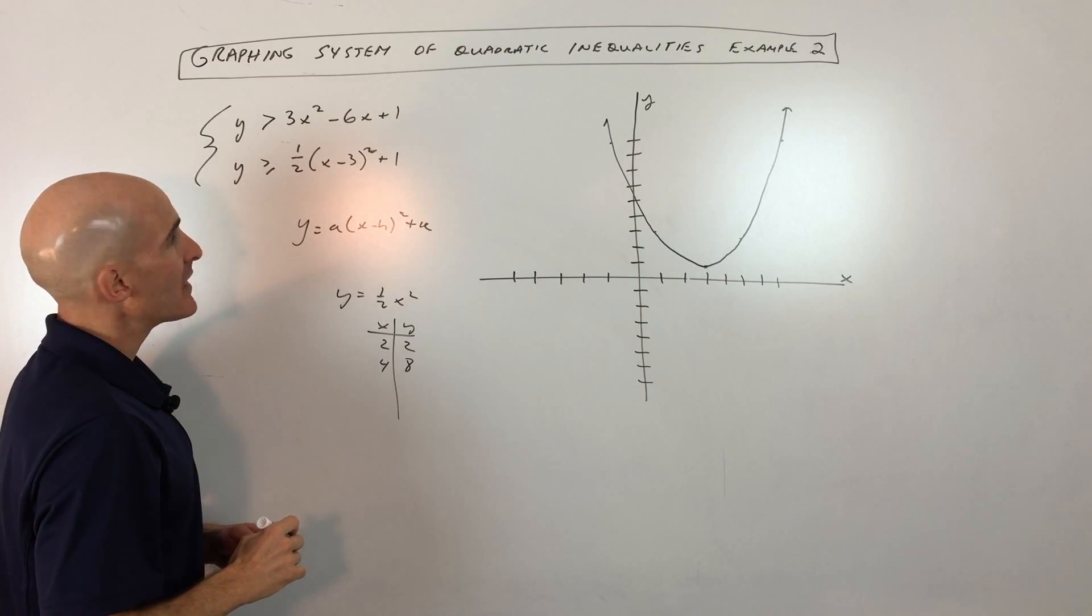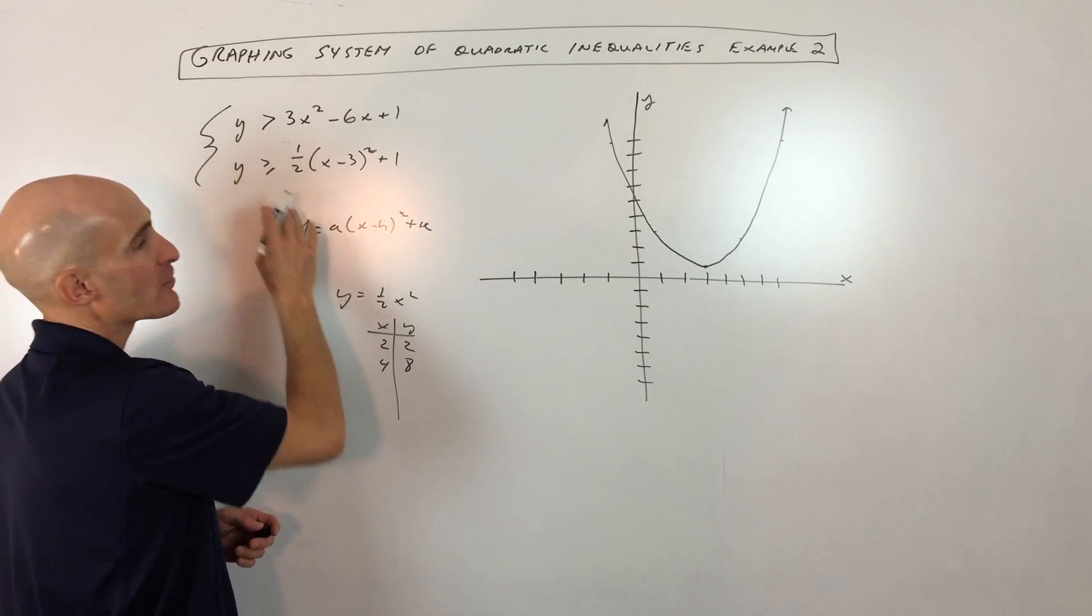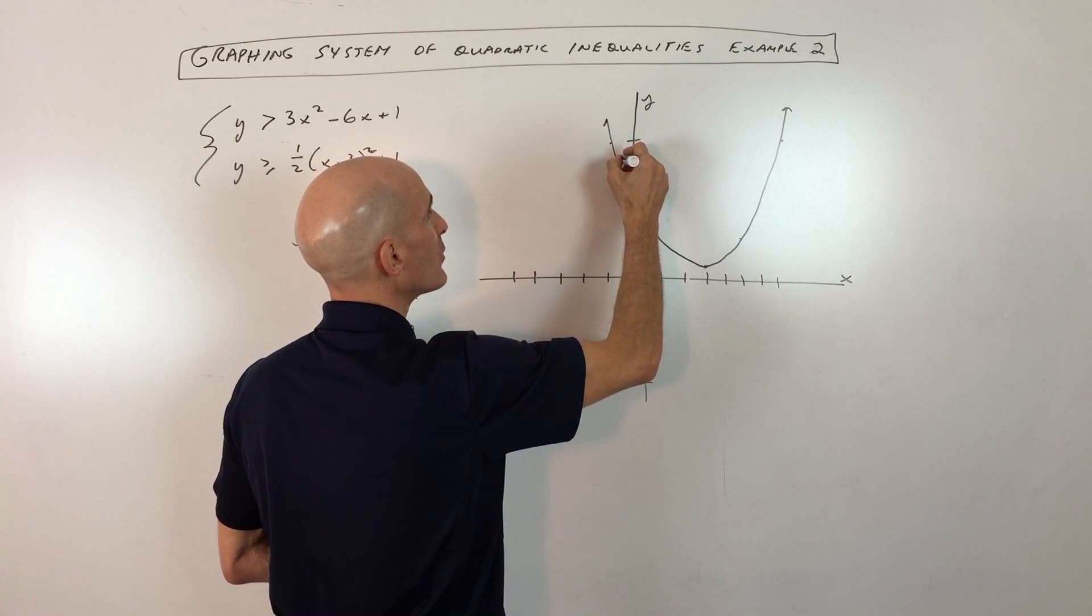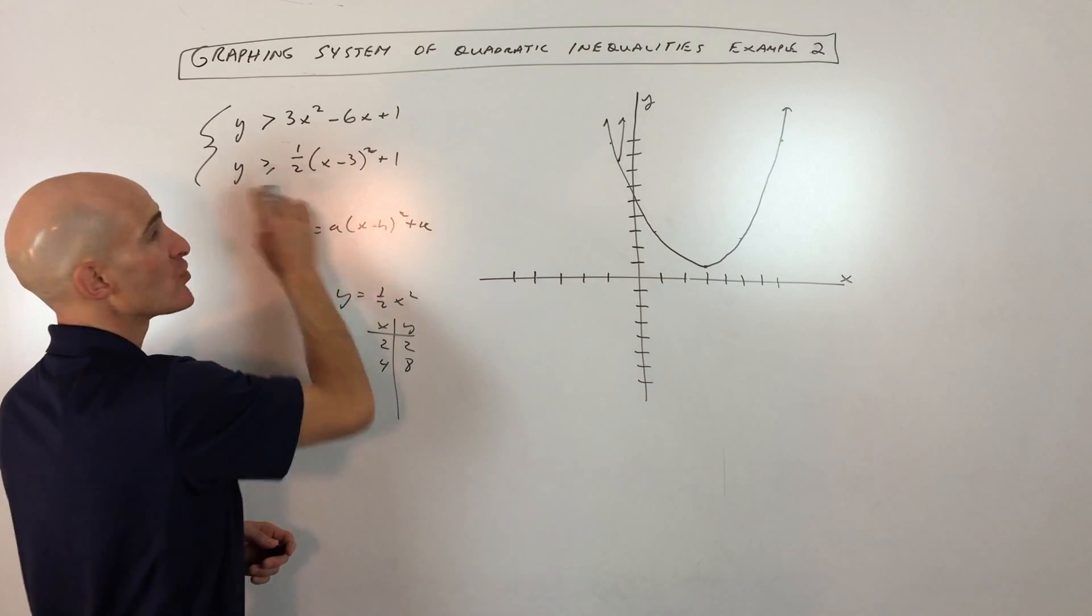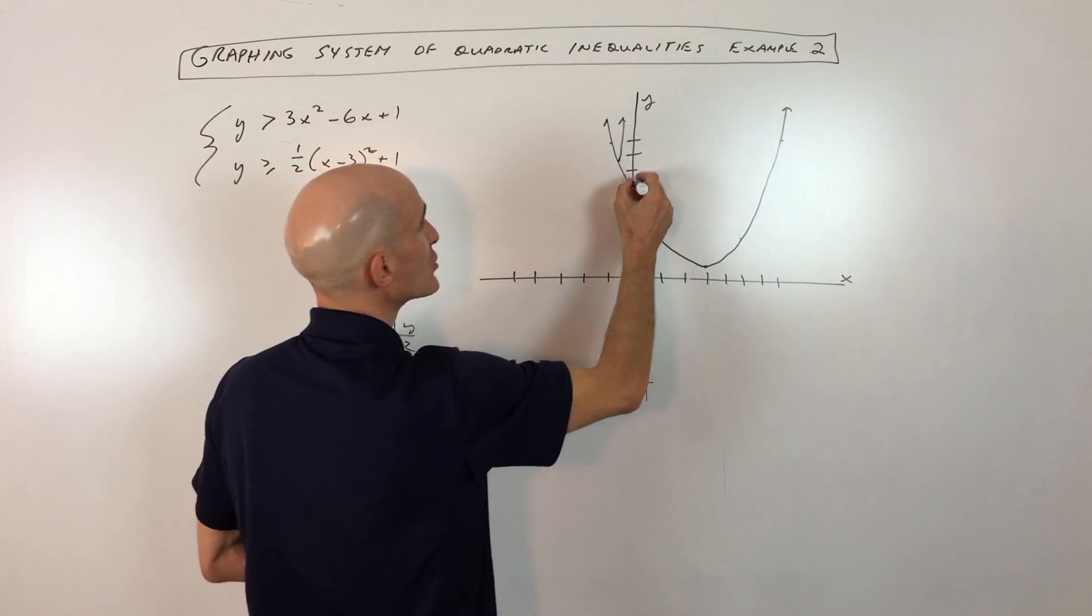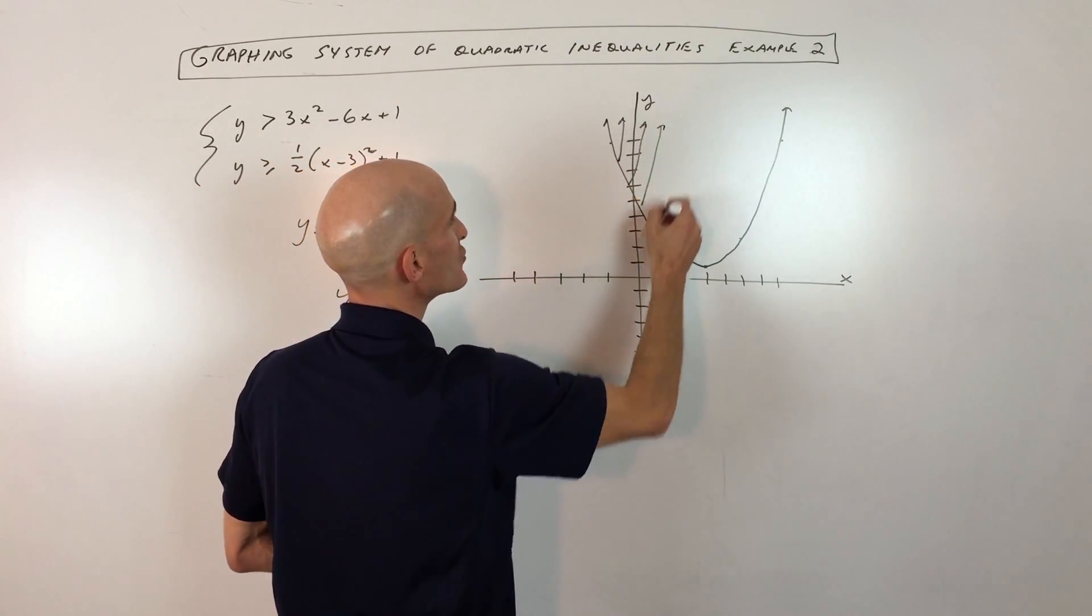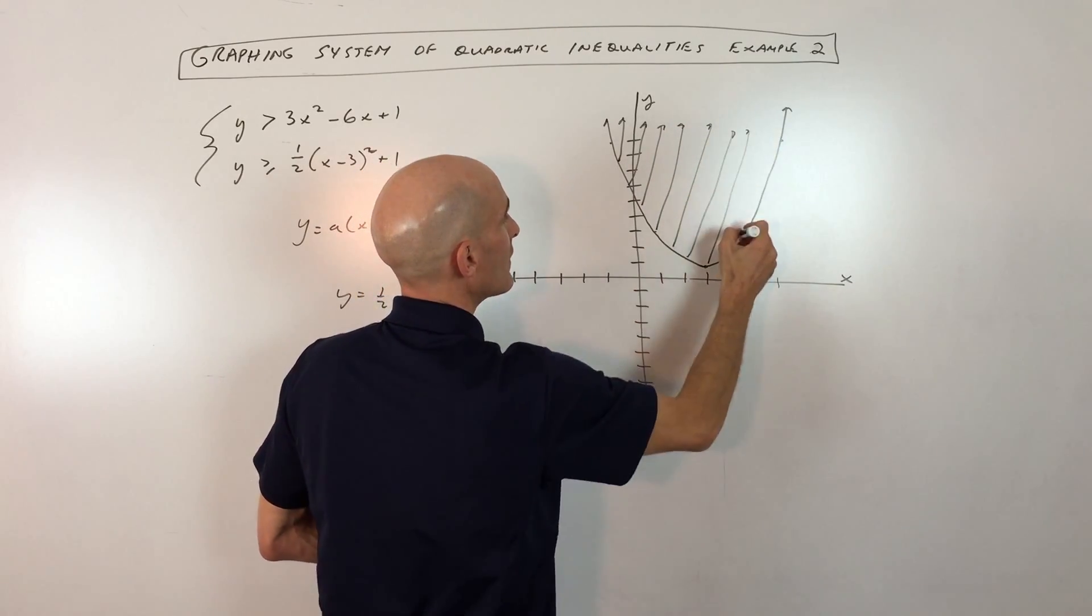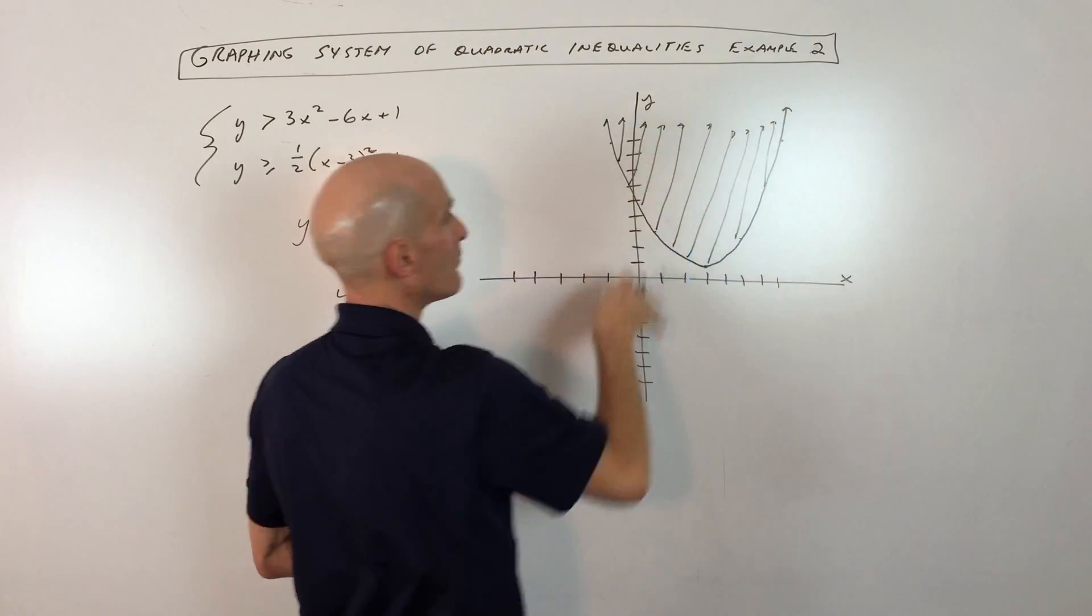Now, the next thing we want to do is we want to shade. So y is greater than means we're going to shade above. Greater than means if we pick a point on the parabola, greater than, because y controls the vertical direction, up and down, greater than we're going to shade straight up. We're shading straight above, like so. If it was less than, we would shade below the graph, down.